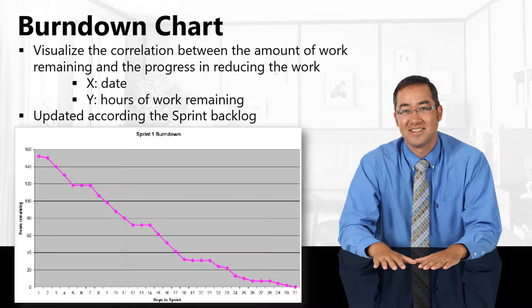The burndown chart simply visualizes the correlation between the amount of work remaining and the progress in reducing that work. On the x-axis (horizontal) you have the days in the sprint, and on the y-axis (vertical) you have the hours remaining. The chart is updated according to the sprint backlog as you progress through your backlog items, giving you a visual picture of work remaining versus progress.